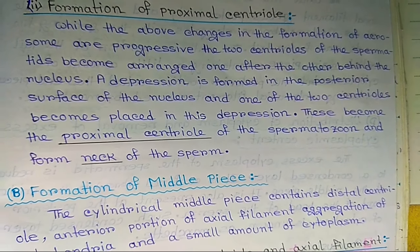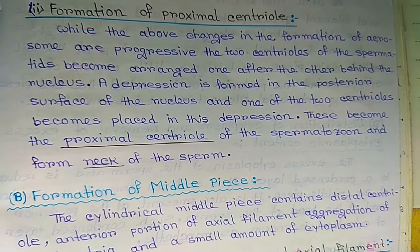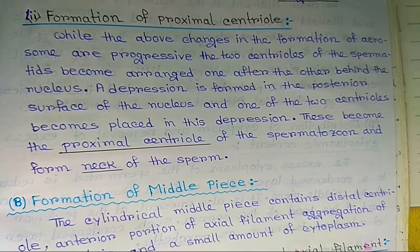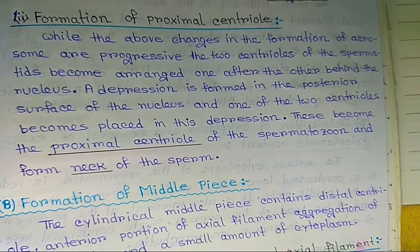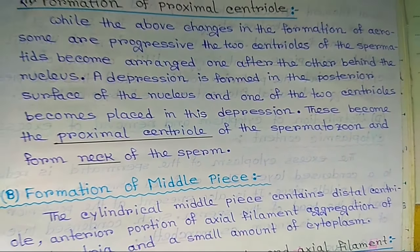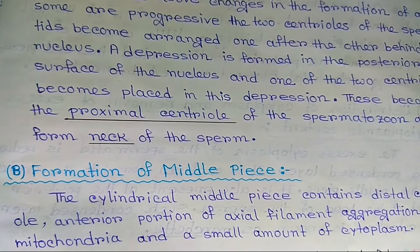Formation of the middle piece: the cylindrical middle piece contains the distal centriole, the anterior portion of the axial filament, an aggregation of mitochondria, and a small amount of cytoplasm.